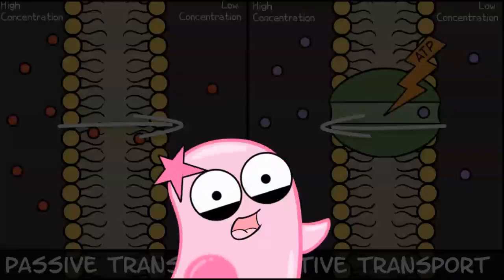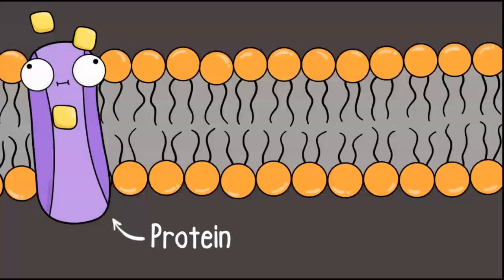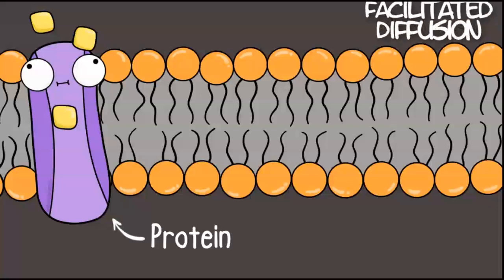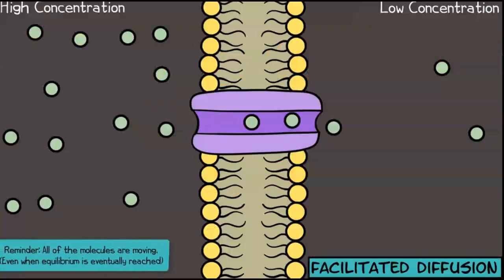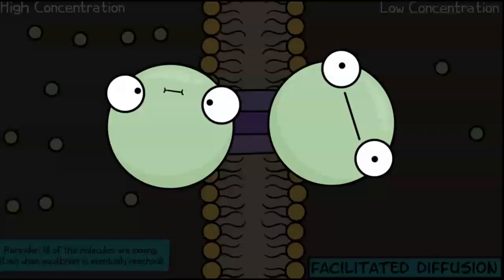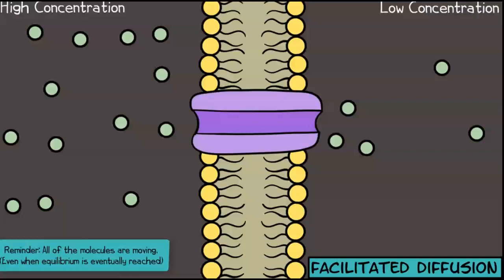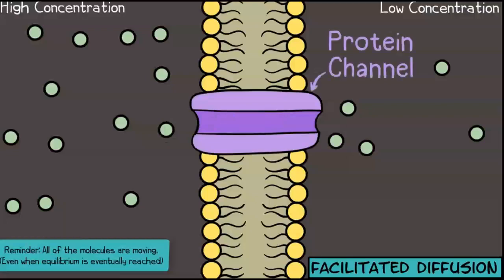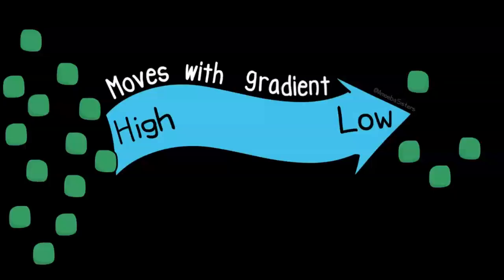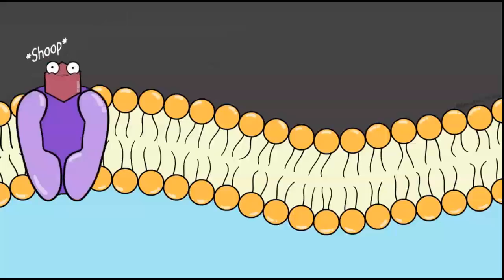And speaking of our cell transport video, we outline that there is also a type of diffusion called facilitated diffusion. Facilitated diffusion is when molecules still have a net movement from high concentration to low concentration, but they may be too large or have other characteristics that prevent them from directly traveling across the selective cell membrane. Therefore, they have to go through a protein channel. It's still diffusion because it's still passive transport and still traveling down its concentration gradient — it just has to go through a protein to get inside.